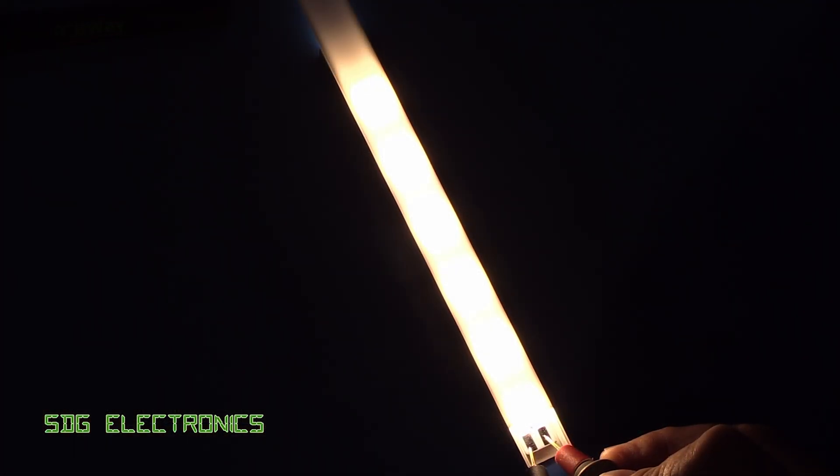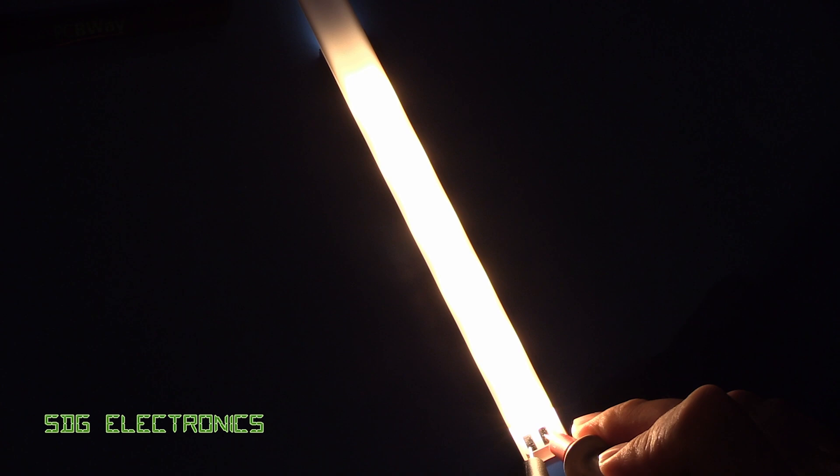So this is the opal diffuser at 60 milliamps, which is the nominal current for these LEDs. Let's turn it up to 150, which is the maximum. And there we go. And that's actually doing a really good job of diffusing the hotspots from these LEDs.